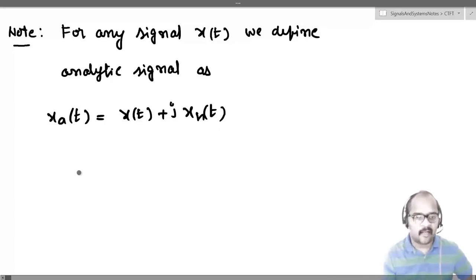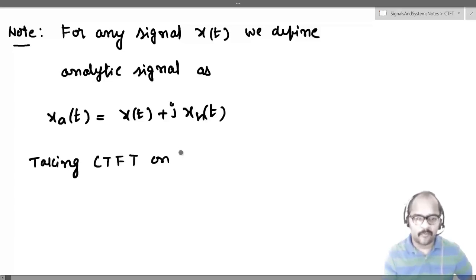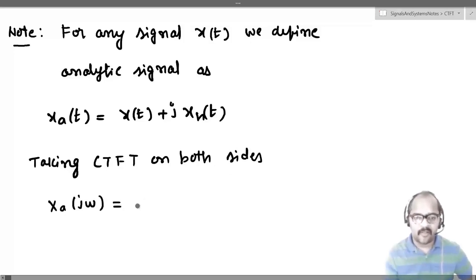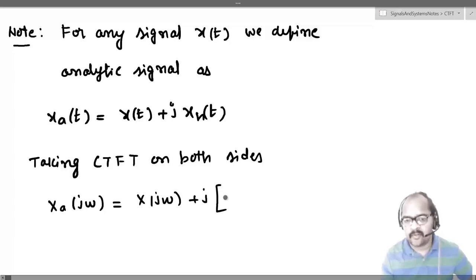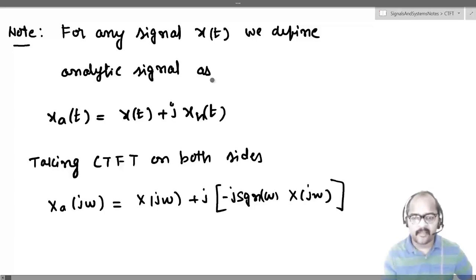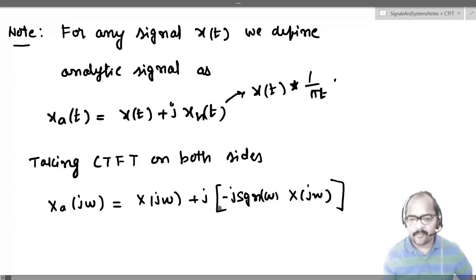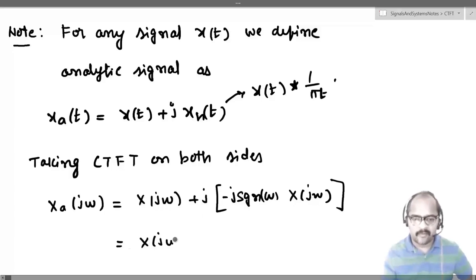Taking the Fourier transform on both sides, we get X_a(jω) = X(jω) + j·X_h(jω). We know that x_h(t) has Fourier transform -j·sgn(ω)·X(jω), since x_h(t) = x(t) * (1/πt). So j times -j·sgn(ω) gives +sgn(ω), and X(jω) is common, giving X(jω)·[1 + sgn(ω)].